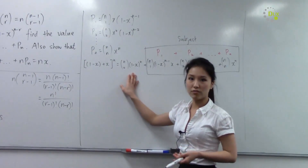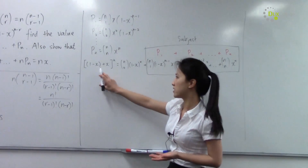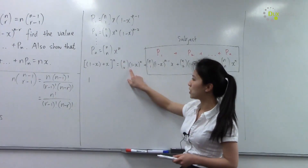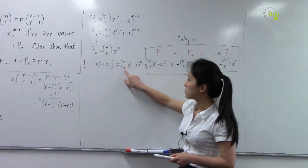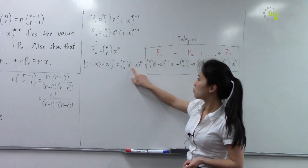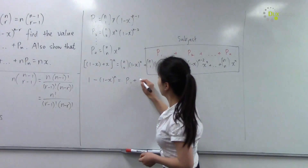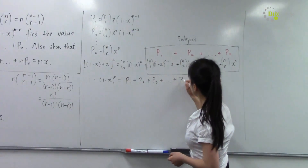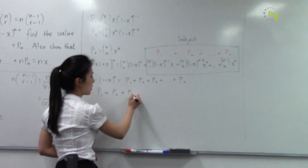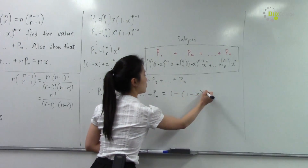To isolate p1 + p2 + ... + pn, we move everything else to the left-hand side. Since (1-x + x) = 1 and 1^n = 1, the left-hand side is 1. Also, C(n,0) = 1, so we move the (1-x)^n term to the left. Therefore p1 + p2 + ... + pn equals 1 - (1-x)^n.